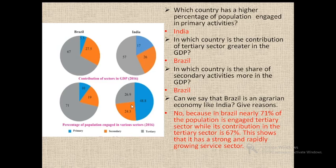In the population engagement pie charts, in Brazil 10% of the total population is engaged in primary activities, 19% in secondary activities, and 71% in tertiary activities. Whereas in India, 48.8% of the population is engaged in primary activities, 24.3% in secondary activities, and 26.9% in tertiary activities.